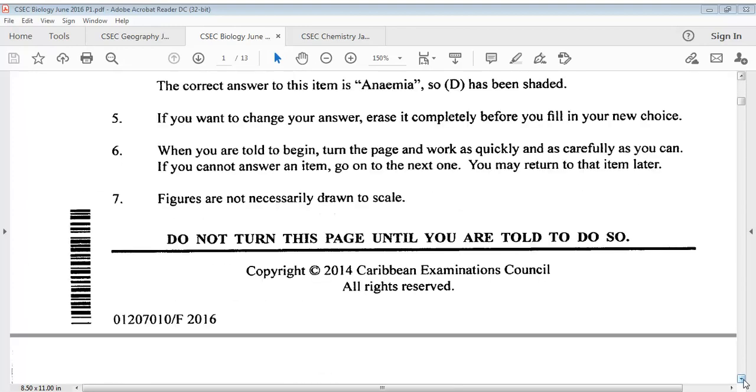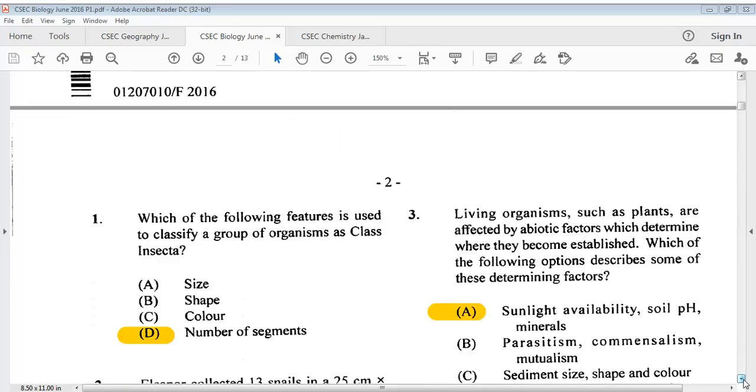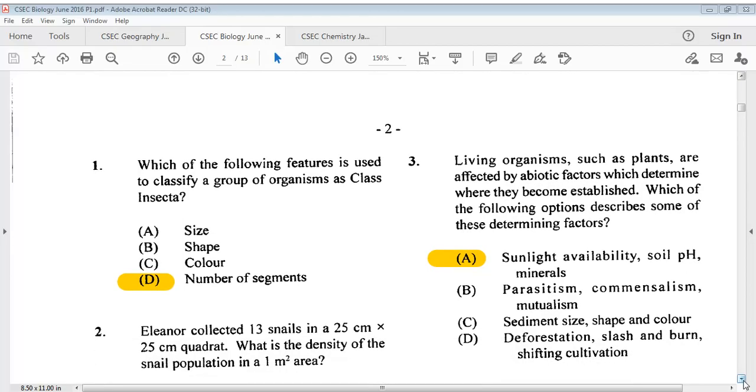Let's get into this paper. I'll be providing you with the answers to these questions. Some of them I'll read, some I won't. You can look on your screen and see the questions clearly. Question one says, which of the following features is used to classify a group of organisms as class insecta? The answer is D, number of segments.